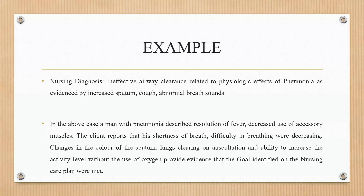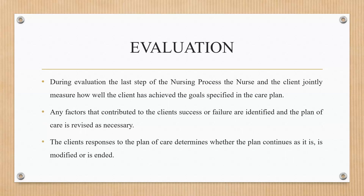Further positive indicators include changes in the color of the sputum, lungs clearing on auscultation, and ability to increase the activity level. During evaluation, the nurse and the client jointly measure how well the client has achieved the goals specified in the care plan. Any factors that contributed to the client's success or failure are identified and the plan of care is revised as necessary.